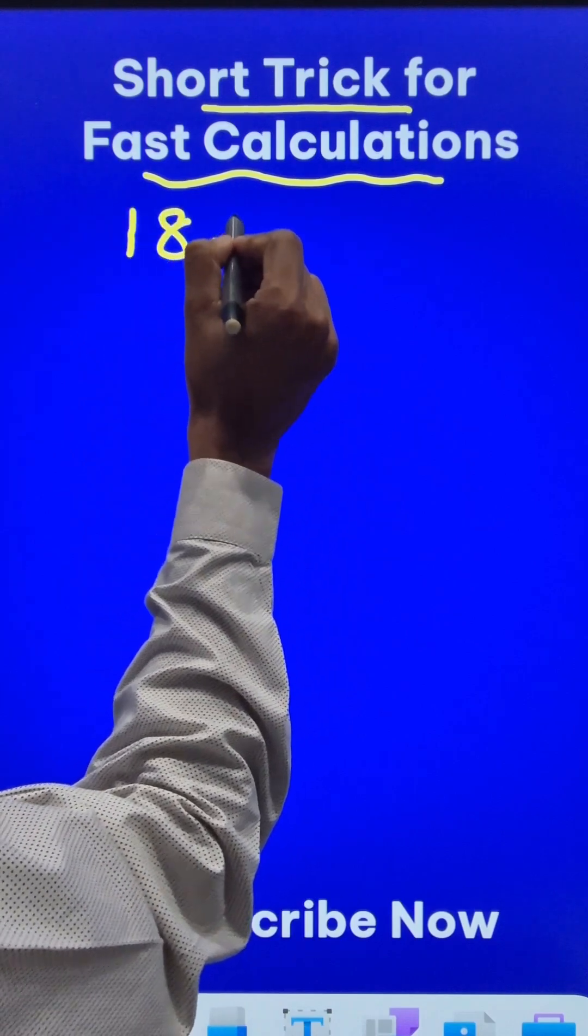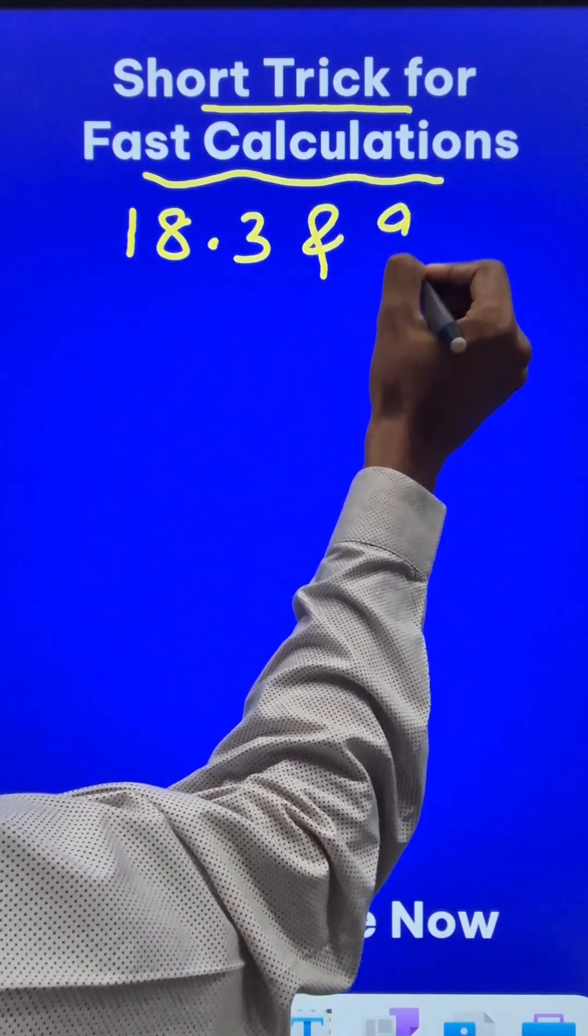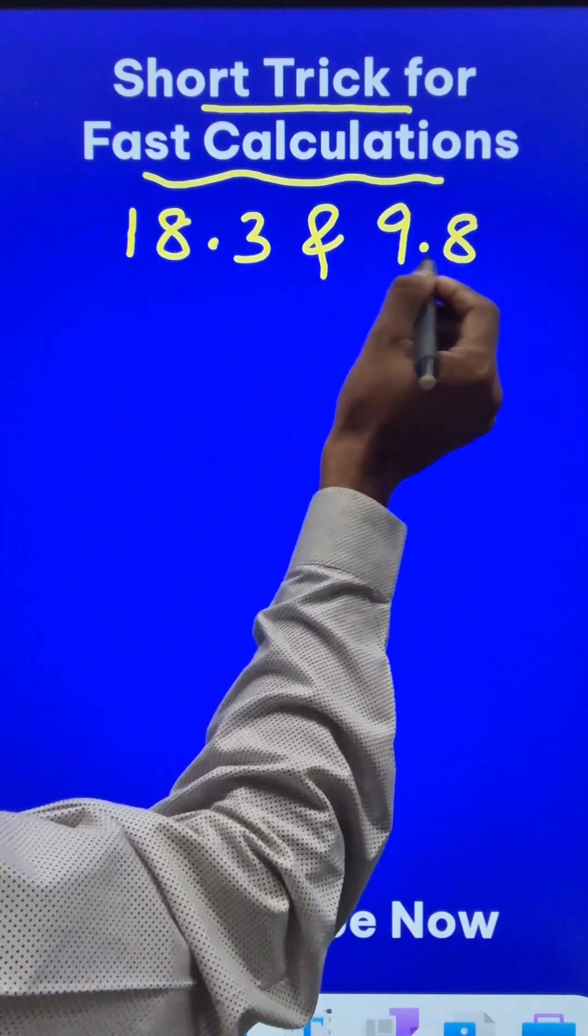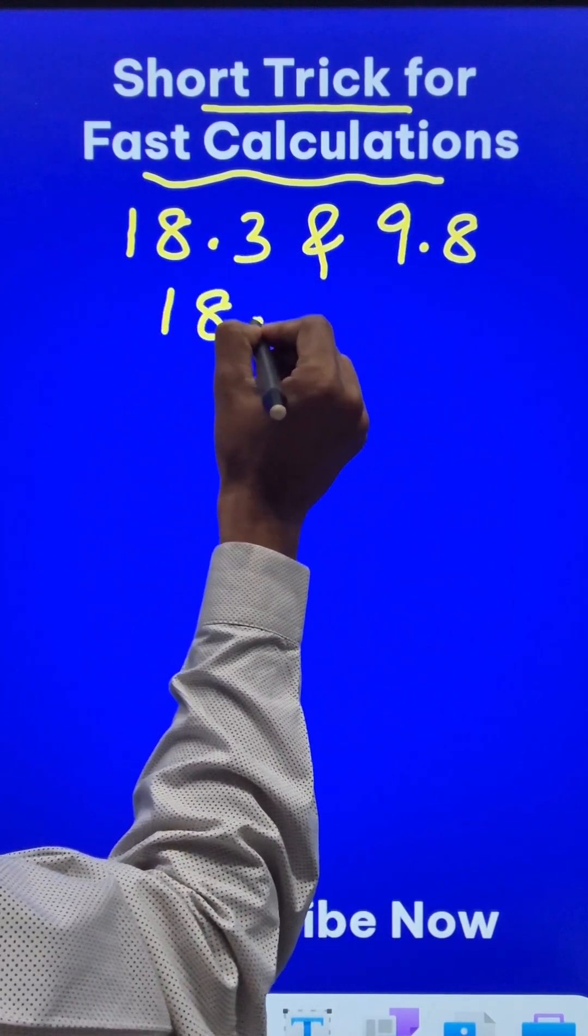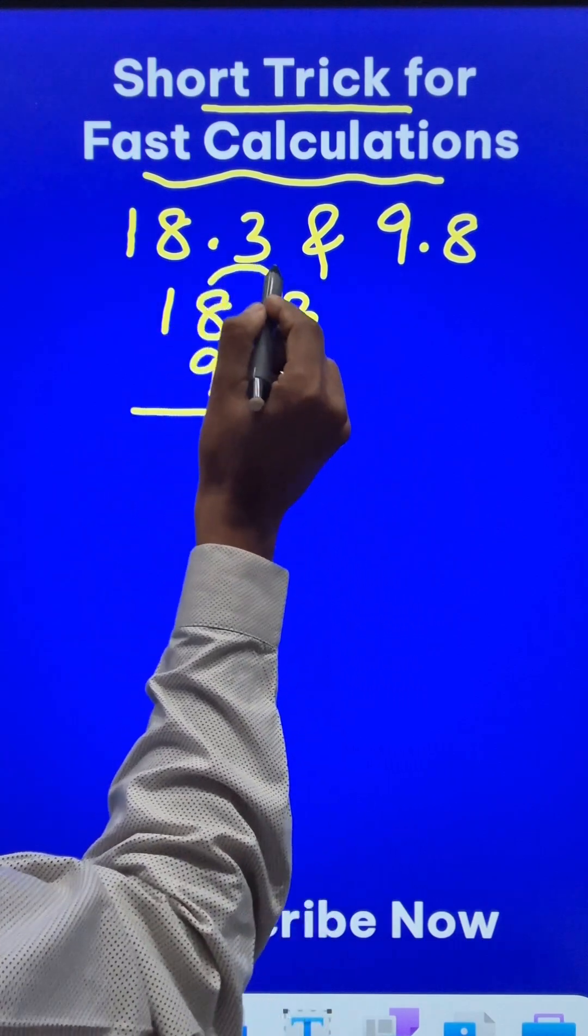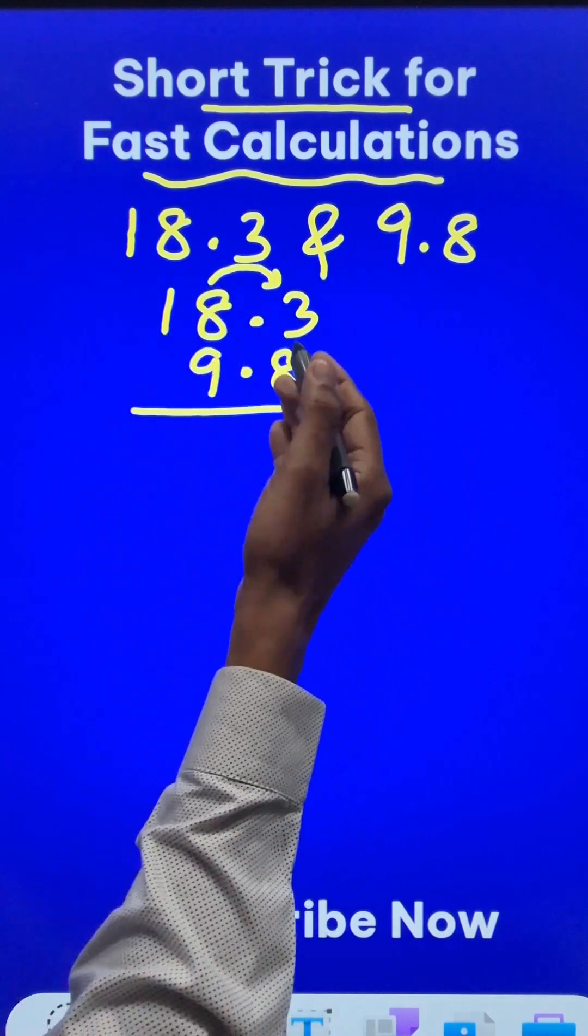Now suppose you have two numbers 18.3 and 9.8. For these two decimals, I need to subtract them first. So if I have to subtract these two, I'll have to write them one below the other by aligning the decimal. Now this involves borrowing and therefore students tend to make so many mistakes.